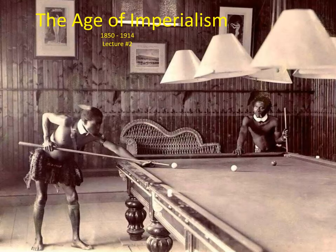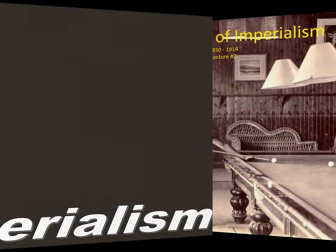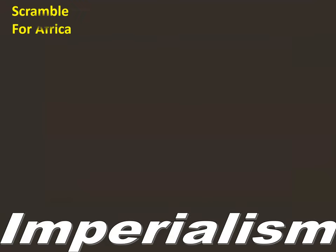This is lecture number two on the age of imperialism, and today we're going to be focusing on Africa. This time period in Africa, in relation to the Europeans, is referred to as the scramble for Africa.